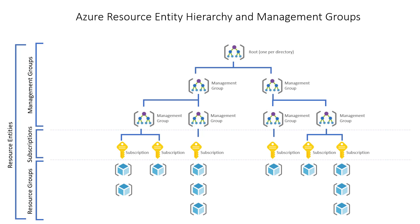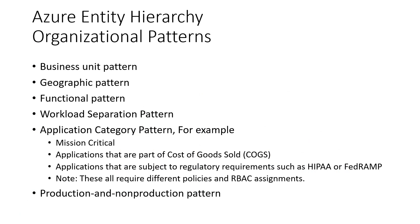Let's look at best practices for organizing hierarchies across both billing and resource entity hierarchies. There are some common organizational patterns that may be useful. The business unit pattern groups subscriptions and accounts based on profit and loss category, business unit, division, or profit center. For organizations with global operations, the geographic pattern groups subscriptions and accounts based on geographic regions. The functional pattern organizes subscriptions and accounts along functional lines such as finance, sales, or IT — though this approach can be susceptible to corporate reorganizations. Depending on the size and scale of an application and organization, it may be appropriate to separate applications by workload, application, or subscription.